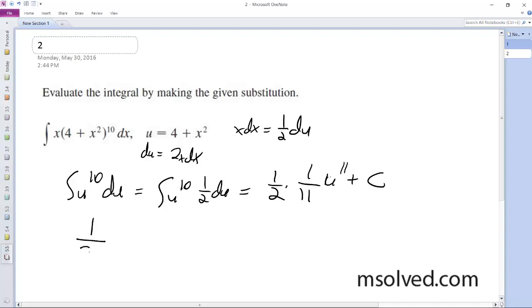So we end up with 1 over 22, and then filling back in for u we get 4 plus x squared raised to the 11th plus c. That's it.